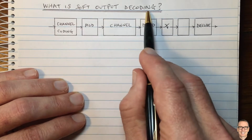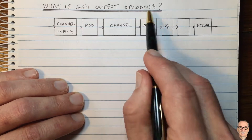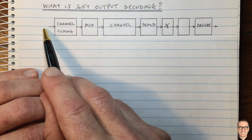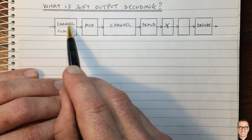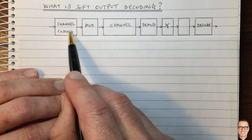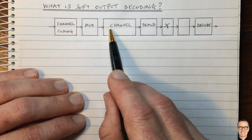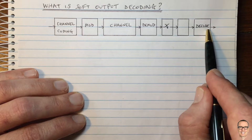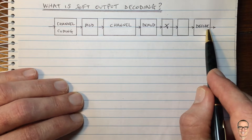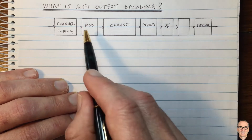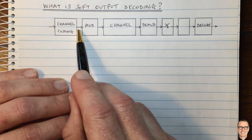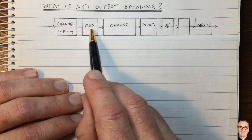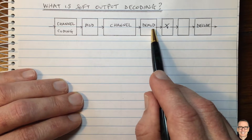What is soft output decoding? Let's look at a standard communication system where the data comes in and first you do channel coding so that you can overcome any errors that might happen in the channel. At the receiver you need to do decoding. To change the coded bits into something that can go over the channel, we do modulation and demodulation.